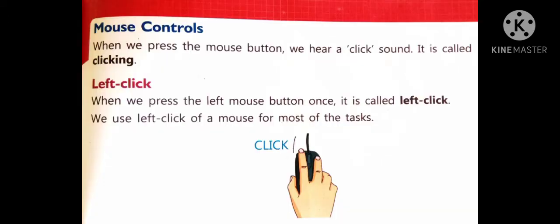Mouse controls. When we press the mouse button, we hear a click sound. It is called clicking. Left click. When we press the left mouse button once, it is called left click. We use left click of a mouse for most of the tasks.